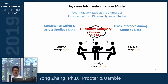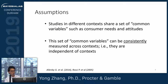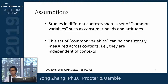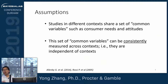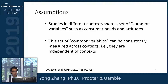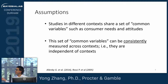The assumptions are: studies in different contexts need to share a set of common variables — in our case, such as consumer needs and attitudes. The idea is, whether a consumer prefers natural ingredients in shampoo or not, whether I provide Head & Shoulders or Dove to you, your preference and needs and attitudes will not change. So some set of common variables will not change across different study contexts. That's the first assumption. The second assumption is that this set of common variables can be consistently measured across contexts — they are essentially independent of context.